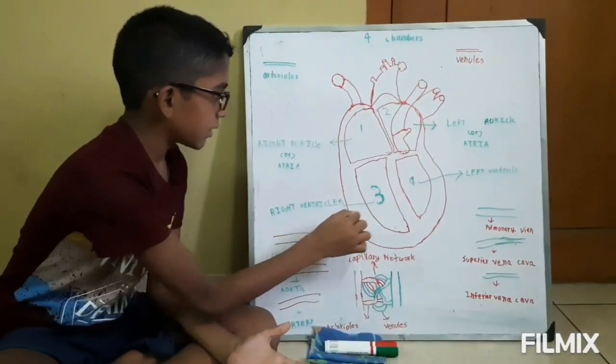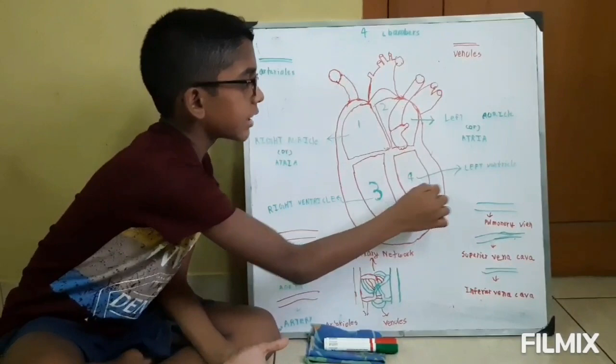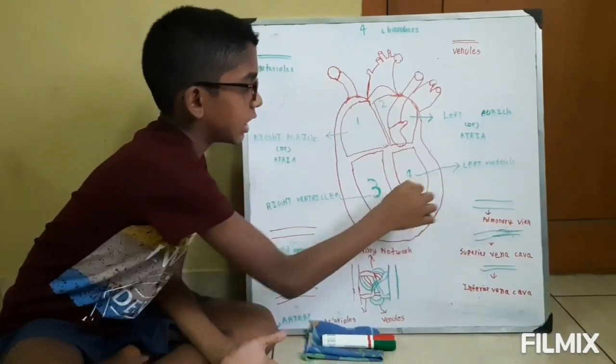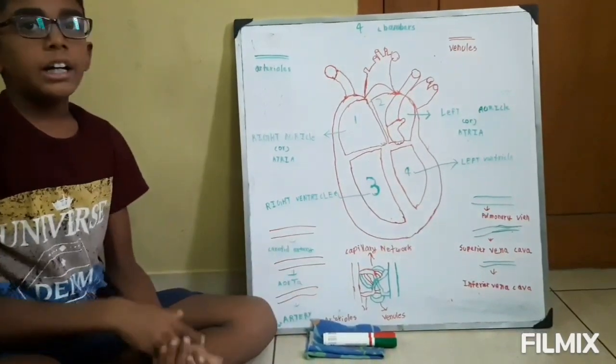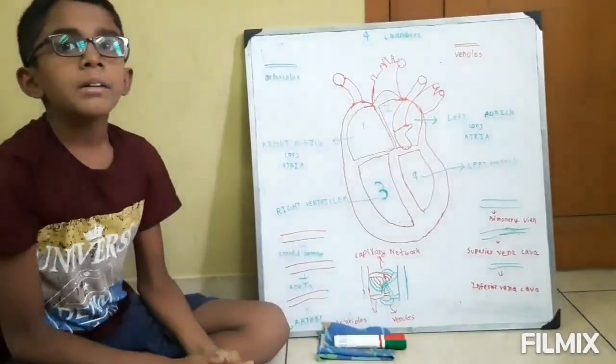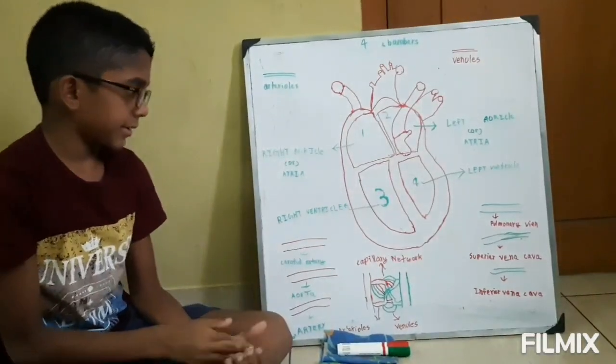The third chamber is the Right Ventricle, and the fourth chamber is the Left Ventricle. These are the lower chambers of the human heart.